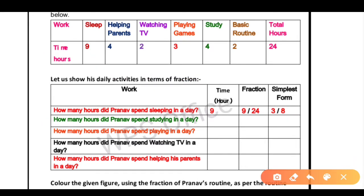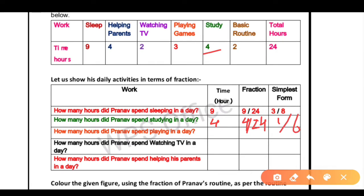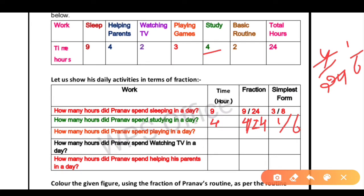The next question is: how many hours did Pranav spend studying in a day? He studies 4 hours, so you write 4 here. What will the fraction be? It is 4 divided by 24. When we simplify 4/24, we divide both by 4, and it becomes 1 by 6.